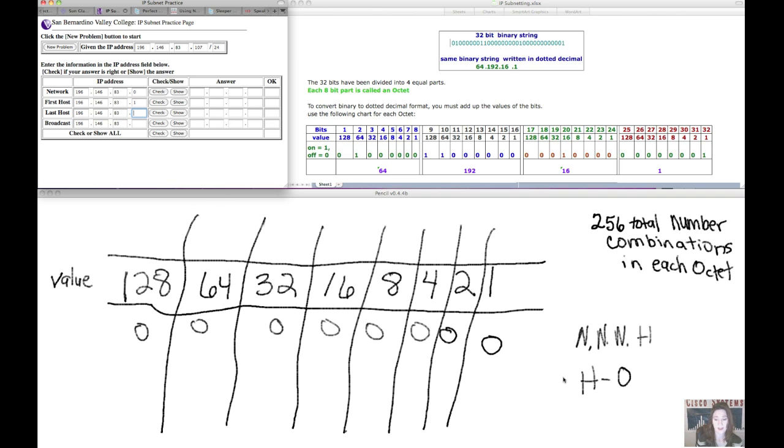What's our rule for the broadcast address? The rule is you change all the host bits to a one. So in this example, all the host bits are the entire eight bits of the last octet. If we add up the values 128, 64, 32, 16, 8, 4, 2, and 1, we get 255.